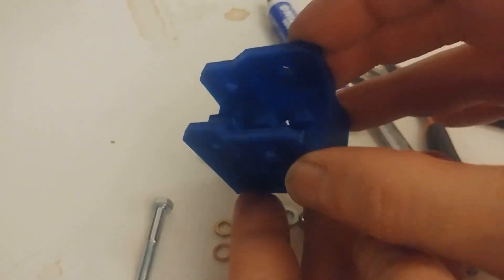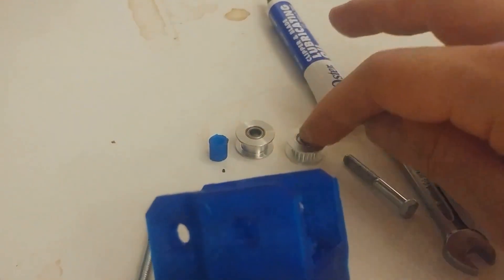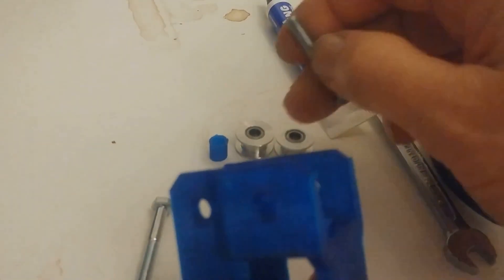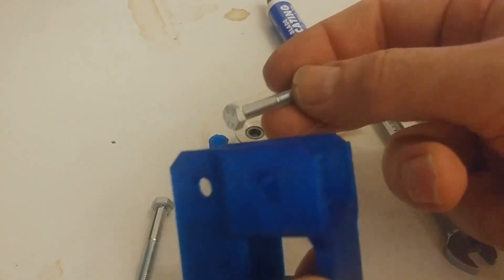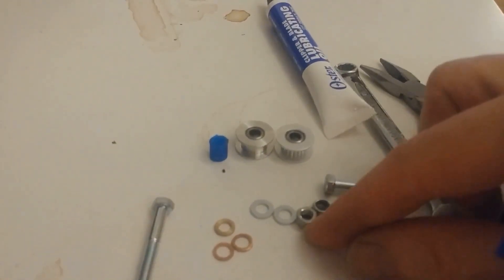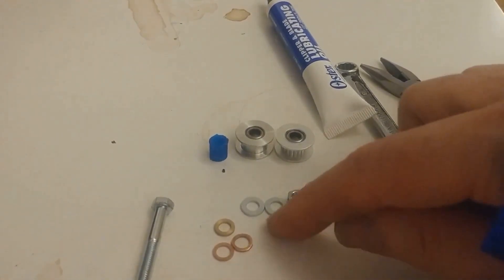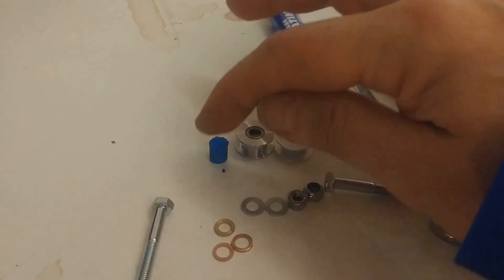Let's assemble the X idler bracket. We need the bracket, one smooth idler, one tooth idler, two M5 by 35 hex bolts, some tools, M8, two washers, two M5 lock nuts, and we also have this spacer.